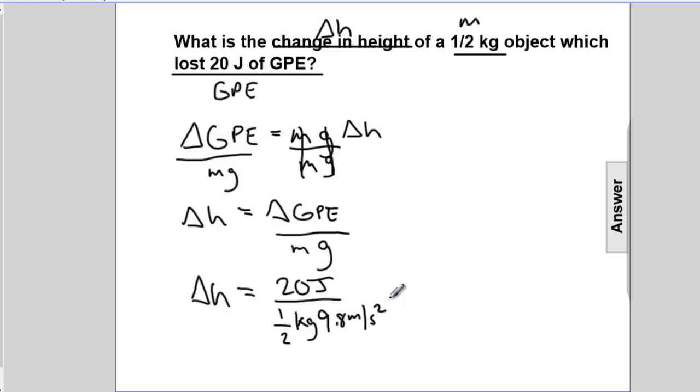We can approximate: one-half times 9.8 is about 5, so the denominator is 5. Twenty divided by 5 is about 4, so we're close to 4 for the answer.